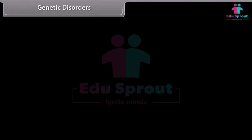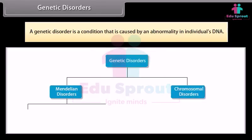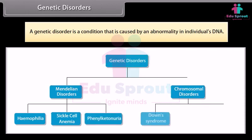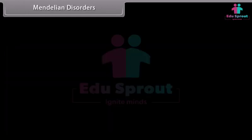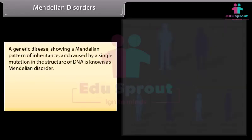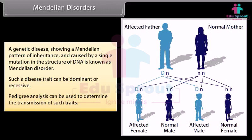Genetic disorders showing a Mendelian pattern of inheritance and caused by a single mutation in the structure of DNA are known as Mendelian disorders. Such a disease trait can be dominant or recessive, and pedigree analysis can be used to determine the transmission of such traits.